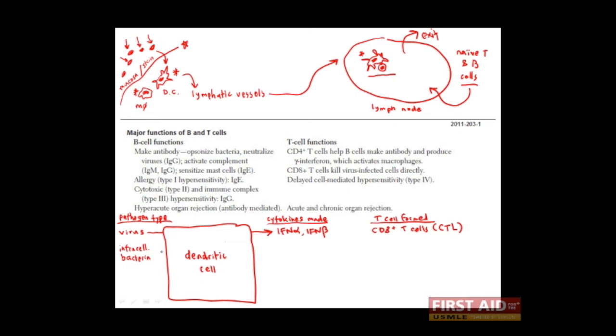Intracellular bacteria, on the other hand, will be recognized by different pattern recognition receptors made by the dendritic cell and will stimulate the production of cytokines known as interferon gamma, TNF alpha, and IL-2 or interleukin-2. In the lymph node, these cytokines promote the activation and proliferation of a kind of CD4 positive T cell known as TH1 cells. We'll talk about the functions of each of these cells, but first let's just discuss the different kinds that exist.